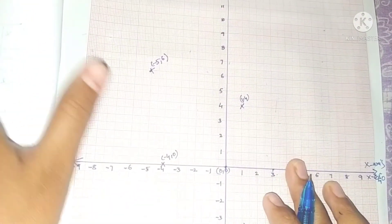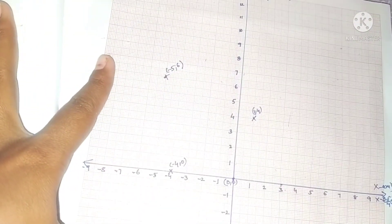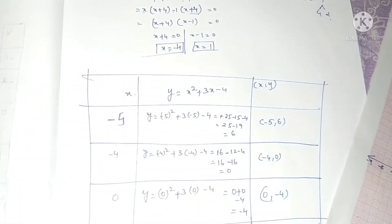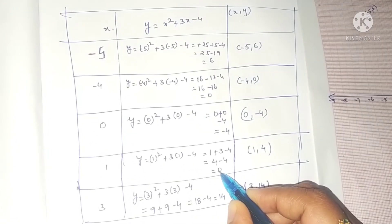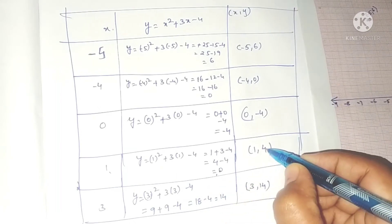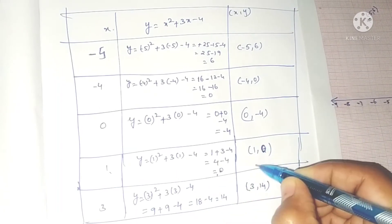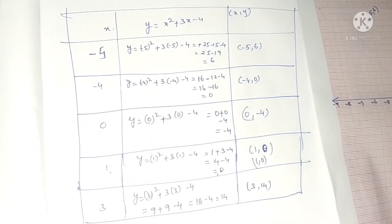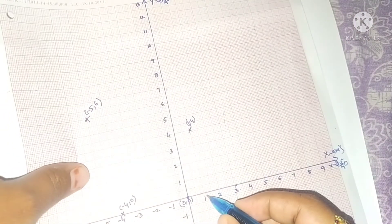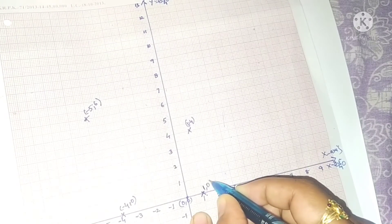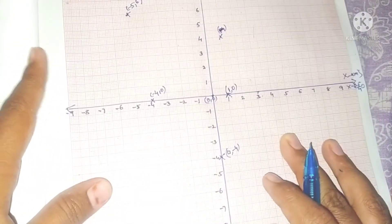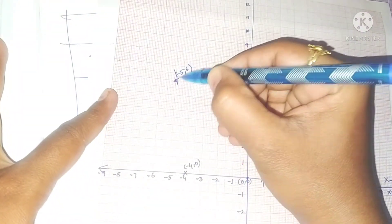Actually, let me correct: when x is 1, y is 0, not 4. So the point is 1 comma 0, which is on the x-axis where y value is 0. So it's 1 comma 0, not 1 comma 4.